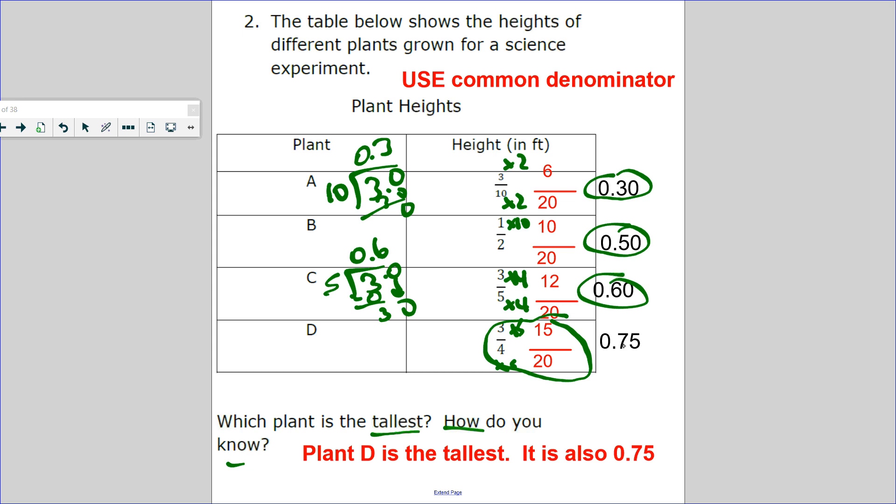Then 3/4. Some of you may have memorized 3/4: one fourth is 25, so three fourths is 75. That is the greatest.